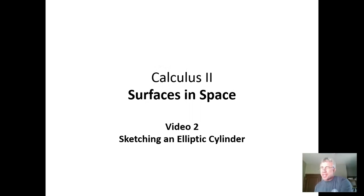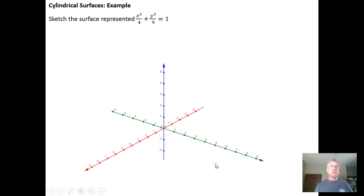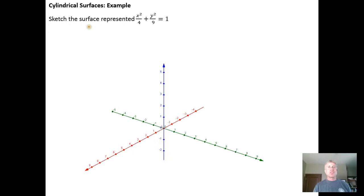In this video we're going to try to make an attempt to draw an elliptic cylinder. It's probably going to turn out horrifying, but we'll live with it. It says sketch the surface, or in this case the cylinder, represented by x squared over 4 plus y squared over 9 equals 1.